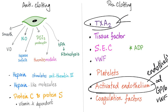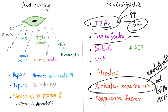Thromboxane A2 has three major jobs: vasoconstriction, increased platelet aggregation, and bronchoconstriction. Tissue factor, also known as tissue thromboplastin, activates the extrinsic pathway by activating factor 7 into its active form. Subendothelial collagen helps with primary hemostasis by facilitating platelet adhesion, and also aids secondary hemostasis — specifically the intrinsic pathway — by activating factor 12.